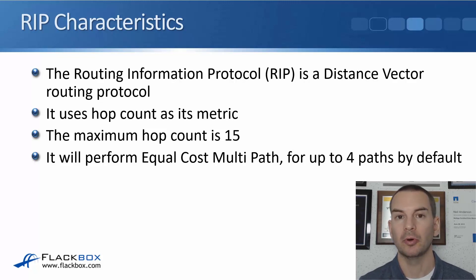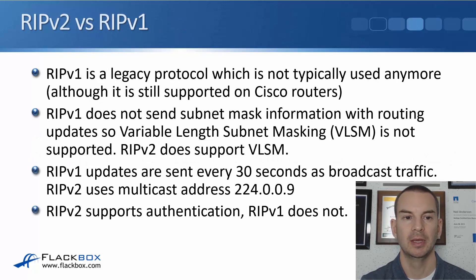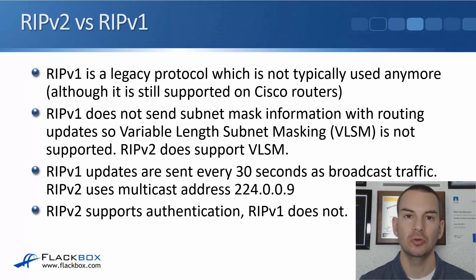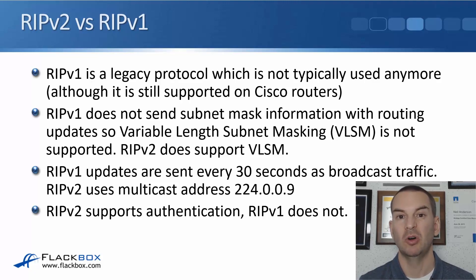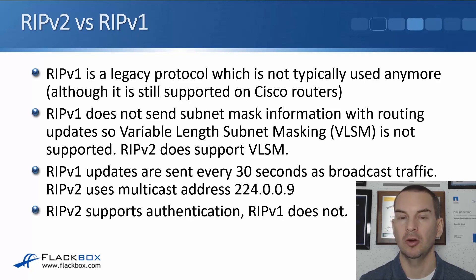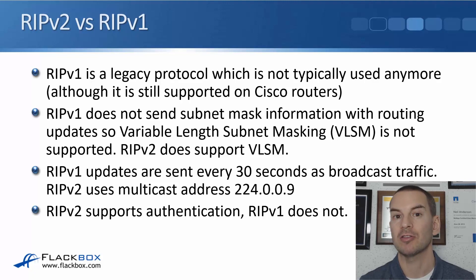RIP will perform equal cost multipath up to four equal cost paths by default. We're currently on RIP version 2. RIP version 1 is a legacy protocol which is typically not used at all anymore, although it is still supported on Cisco routers. RIP version 2 isn't used very often either.